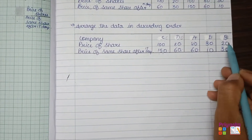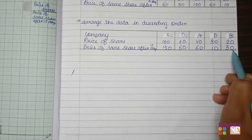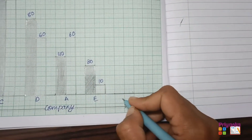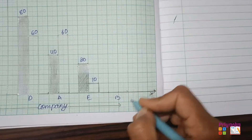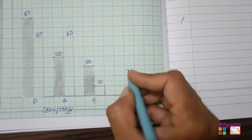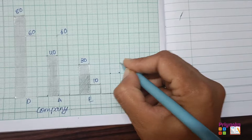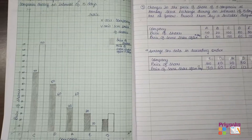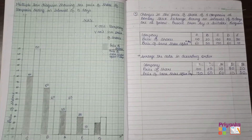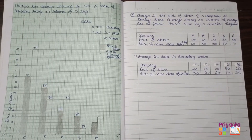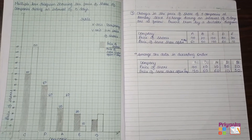The last company is Company B, which shows a price of share of 20, increased to 30 after 15 days. Keep some distance, draw the shaded bar till 20 and the blank bar till 30. This is how the multiple bar diagram has to be presented for Question 3. Moving to the next question.